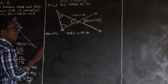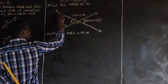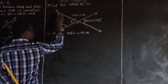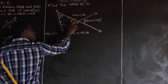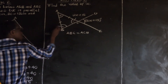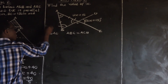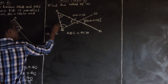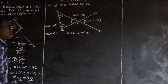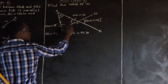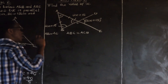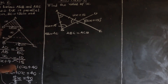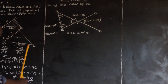Now, since angle ABC and angle ACB are the base angles of this isosceles triangle and are equal, if angle ACD is 2X plus 15, then angle ACB is also 2X plus 15. So we are going to find the value of X.